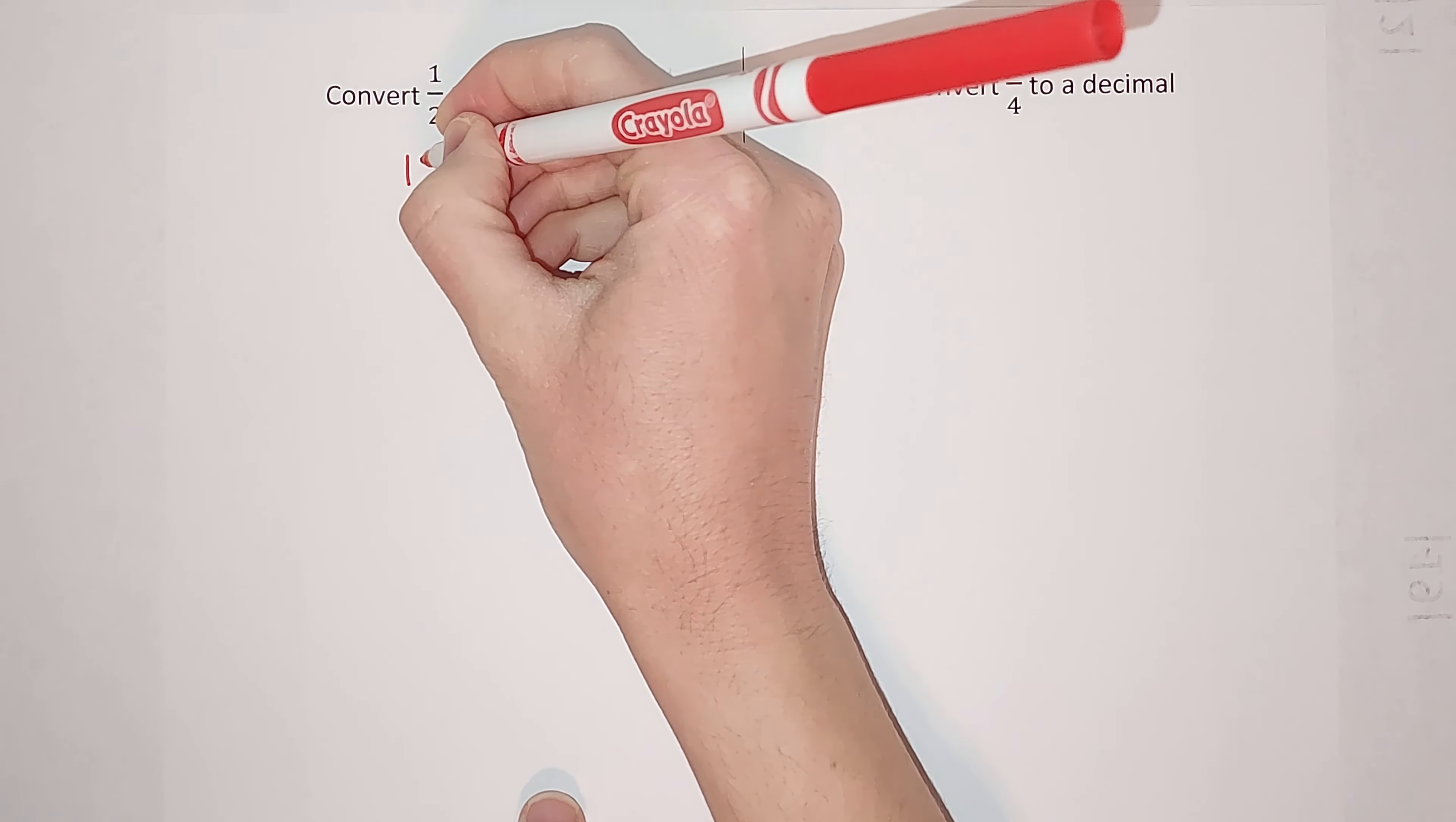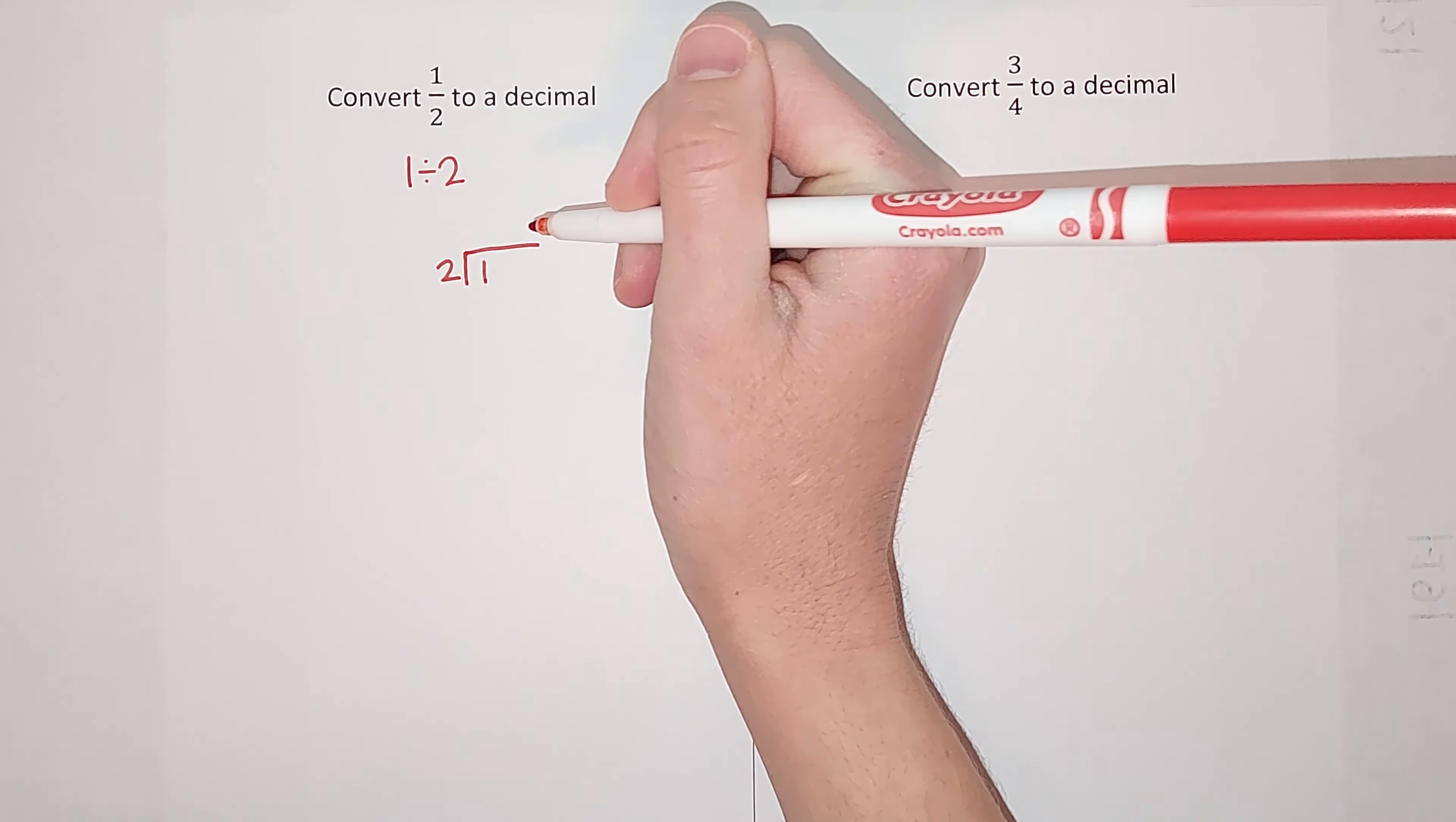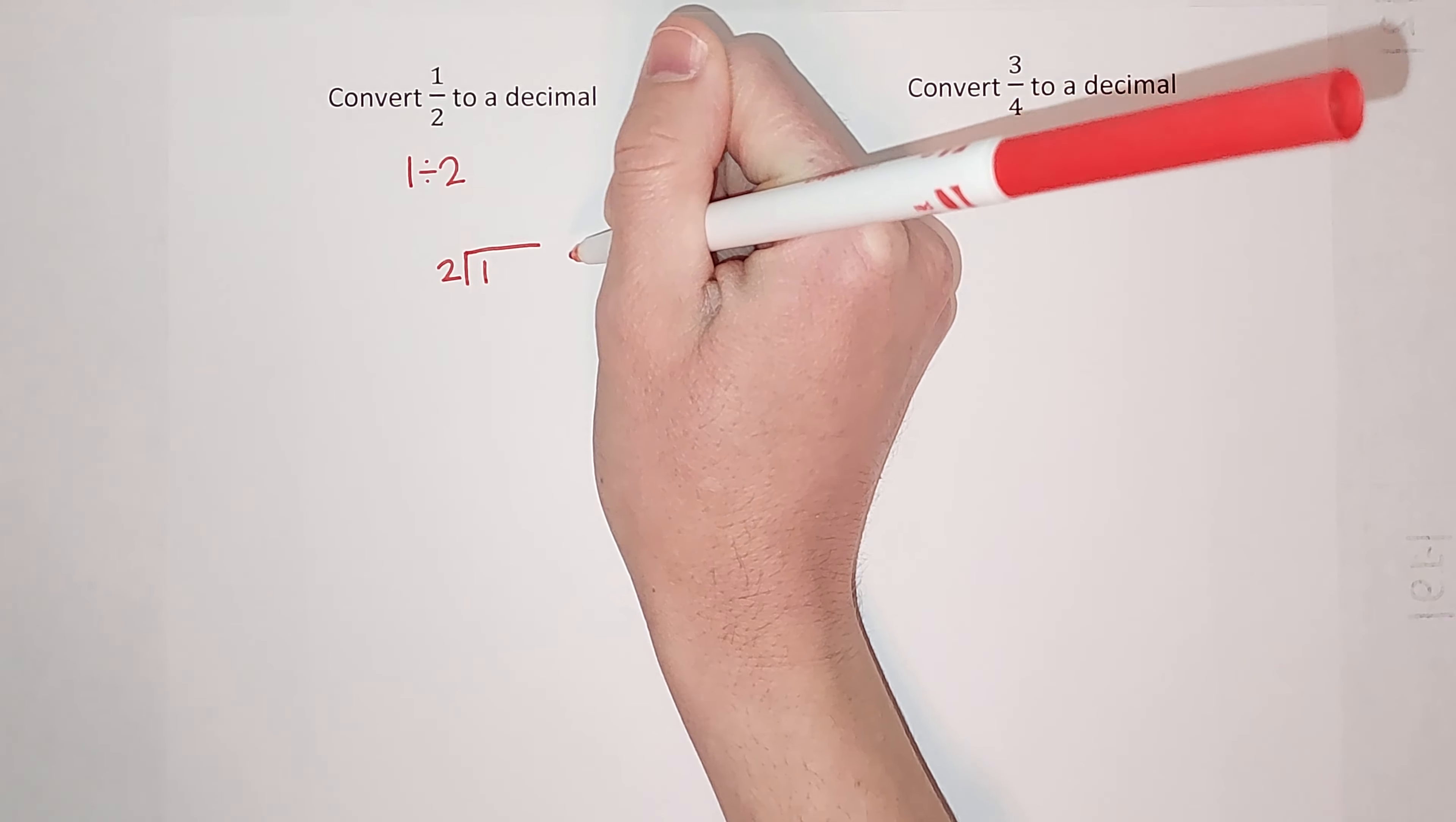So if I do that long division ways, my first number goes inside my box. So I'm really dividing two into one. This is where you're like two doesn't go into one. Okay I hear you. What happens if we can't do two into one? What we do is we start adding a decimal and zeros on here.